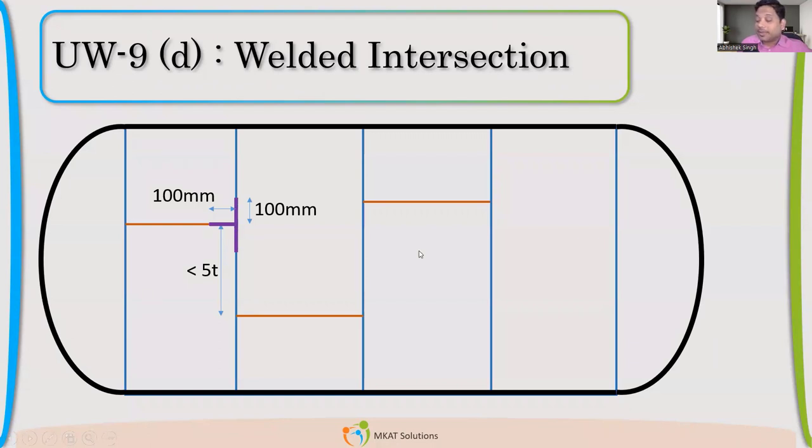So, 100 mm, 100 mm and 100 mm, then it is permitted to even have less than 5T. Even I can have a weld like this. It is not a good engineering practice. We generally try to avoid, but as per code, it is possible. Making sense?